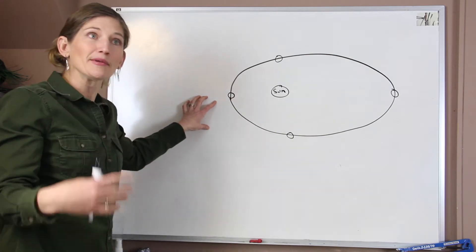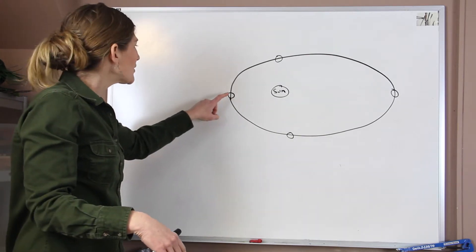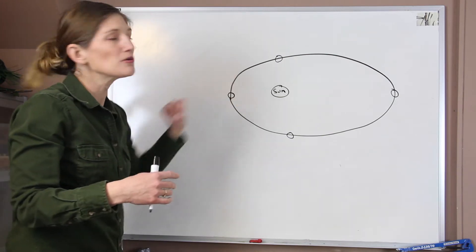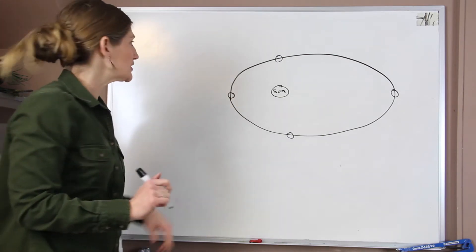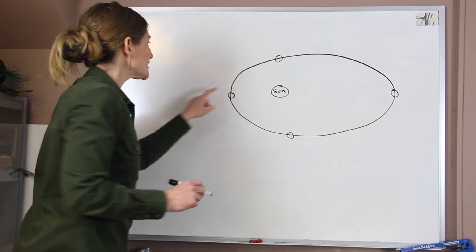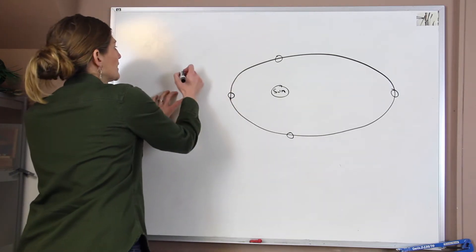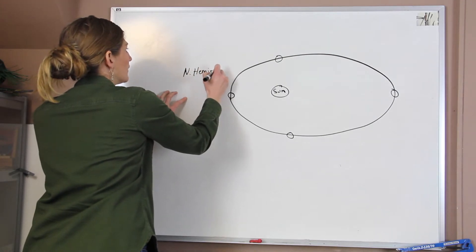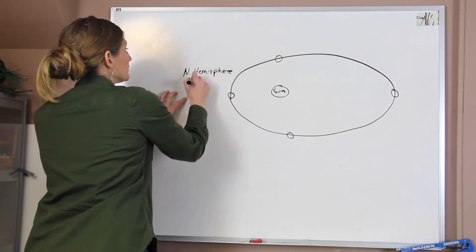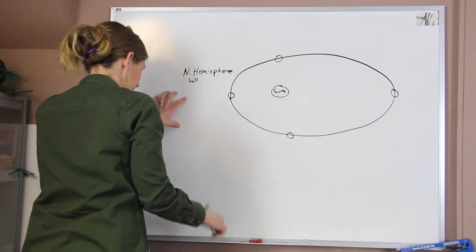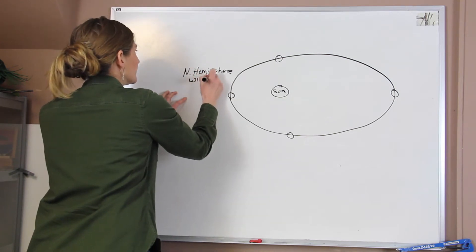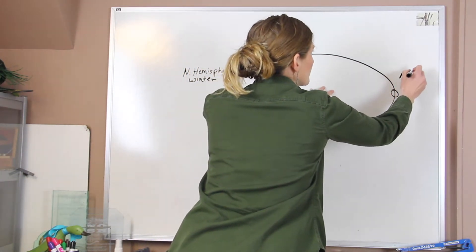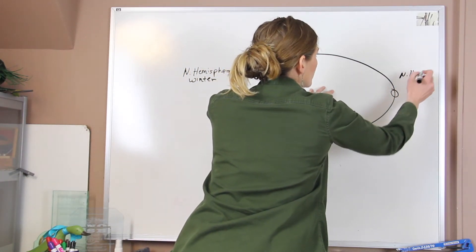Now what's a common misconception is that we often think, in the northern hemisphere, we experience summer when we're closest to the sun. And that's not true. So when we are closest to the sun, this is when we experience the northern hemisphere winter. And when we are farther from the sun, this is our northern hemisphere summer.